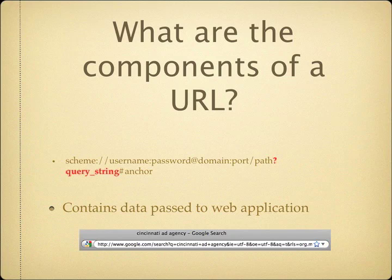If you do a Google search, you'll see all this stuff in the URL. The important thing to note is the question mark, and then it'll have something equals something — that's the data that gets passed in. For example, ID equals 12345: the variable is ID and the value is 12345.